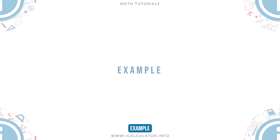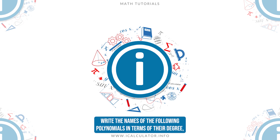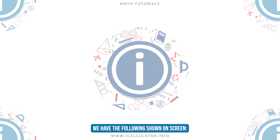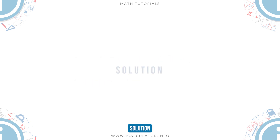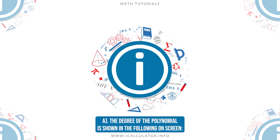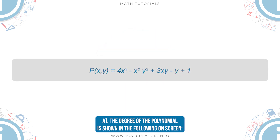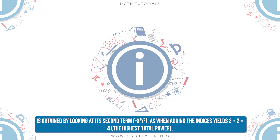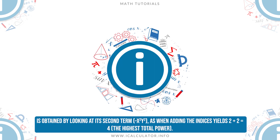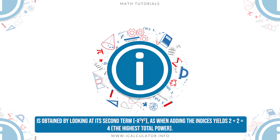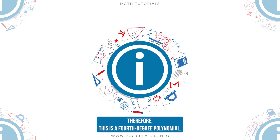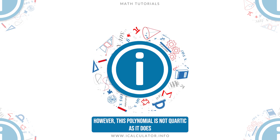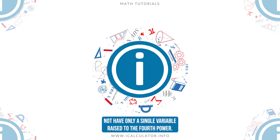Example. Write the names of the following polynomials in terms of their degree. Solution. A. The degree of the polynomial shown on-screen is obtained by looking at its second term, −x²y², as when adding the indices yields 2 + 2 = 4, the highest total power. Therefore, this is a fourth-degree polynomial. However, this polynomial is not quartic, as it does not have only a single variable raised to the fourth power.